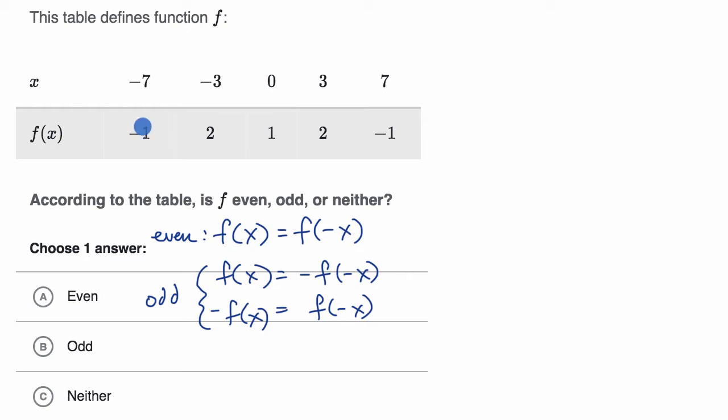So what's going on over here? Let's see, f of negative seven is equal to negative one. What about f of the negative of negative seven? Well, that would be f of seven, and we see f of seven here is also equal to negative one.